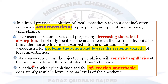Vasoconstrictors constrict the blood vessels to that particular area, lowering the absorption — that is, decreasing the rate of absorption of the local anesthetic towards the systemic circulation by constricting the capillaries in the injected area. Anesthetics with epinephrine are used for infiltration anesthesia, which is the application of the anesthetic drug directly to the subcutaneous tissue, resulting in lower plasma levels and decreased systemic toxicity due to the vasoconstrictive effect of epinephrine.